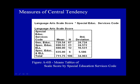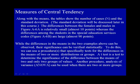Along with the means, the tables show the number of cases, the N, and the standard deviation. The standard deviation will be discussed later in this course. The difference between females and males in figure A6A is relatively small, almost 10 points, whereas the differences among the students in the special education services codes, figure A6B, are large, almost 90 points.